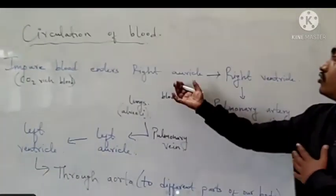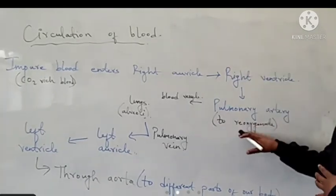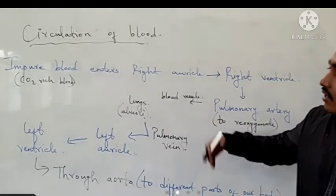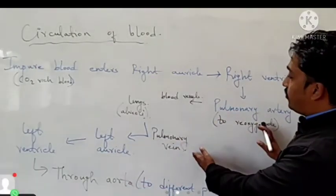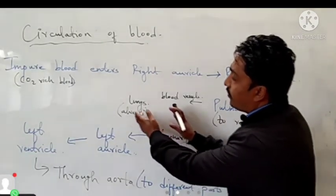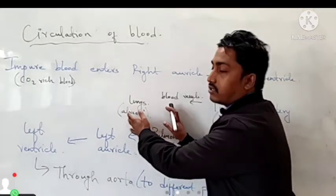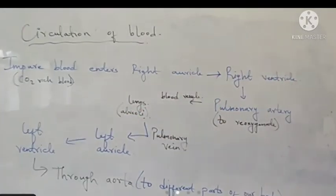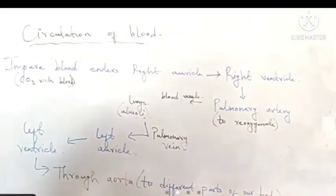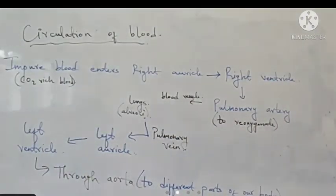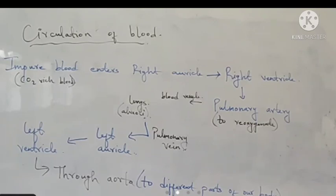The same cycle continues: from auricles to ventricles, then pulmonary artery, exchange of gases in the lungs, then pulmonary vein, then left auricle, left ventricle, and again back to different parts of our body through the aorta. This was all about heart and circulation of blood.